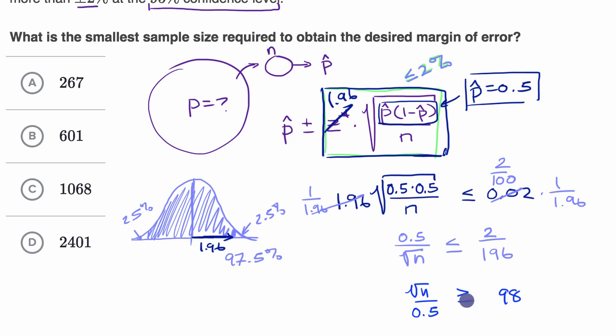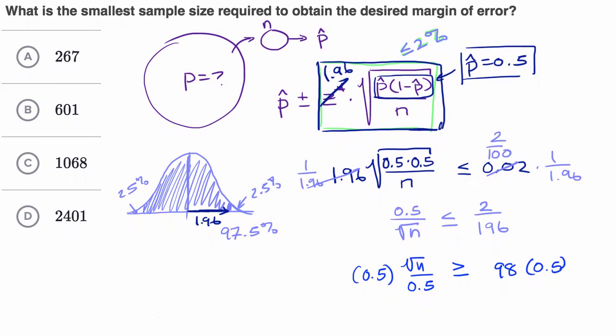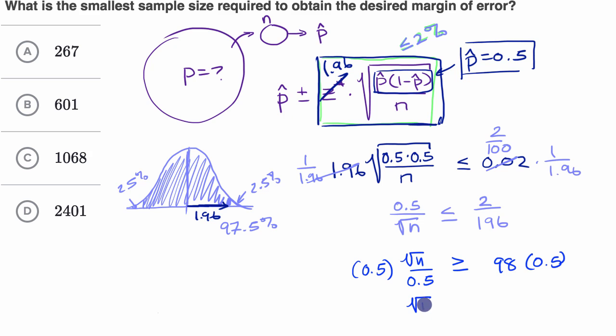I can multiply both sides by 0.5, so there we get the square root of n needs to be greater than or equal to 49, or n needs to be greater than or equal to 49 squared.